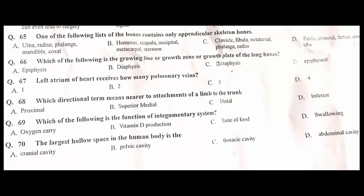The growing zone or growth plate of a long bone is the metaphysis — C is the correct option. The left atrium of the heart receives four pulmonary veins — D is the correct option. The directional term meaning near the attachment of a limb to the trunk is proximal — that is the correct option.